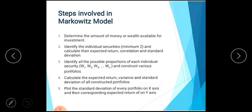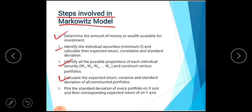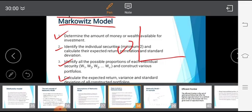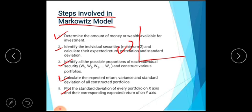Now, the steps involved in Markowitz's model. First, determine the amount of money available for investment. Second, identify the individual securities and calculate their expected return. Third, identify all possible proportions of the individual securities and construct various portfolios. Portfolio creation allows you to create a portfolio from individual securities. This step determines the level of risk and the maximum return of the portfolio.